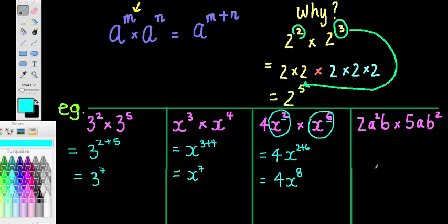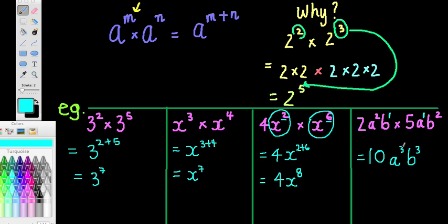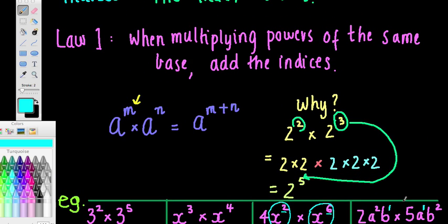The final example is a little bit trickier. First I can do 2 times 5, which is 10. Then a squared times a — any number with no index written has an invisible index of 1, so a squared times a is a to the power of 2 plus 1, which is a cubed. Finally b to the power of 1 times b squared is b to the power of 1 plus 2, which is b to the power of 3. So the answer is 10 a cubed b to the power of 3. Pause where necessary if you'd like to put these examples into your workbook.